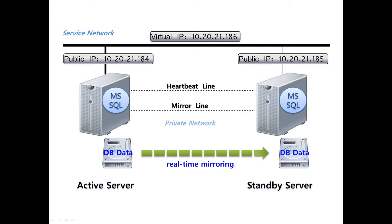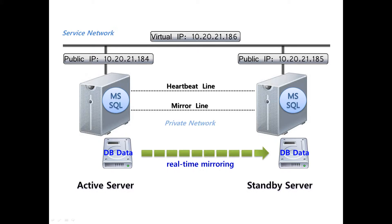Let's look at the demo environment first. There are two servers with MS SQL installed for demo purposes in each machine. Let's name them server A and server B. There is a heartbeat line for communication path and a mirror line for data replication between servers. There are real IP addresses to manage each server and a virtual IP address which is switchable between servers. This will be assigned on the real IP address of the active machine. Data will be stored in the internal disk of the server and this will be replicated to the standby server through the mirror line.